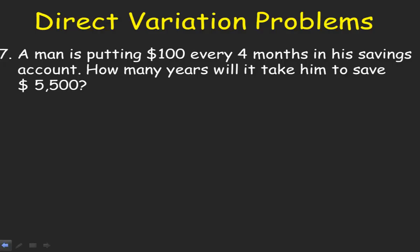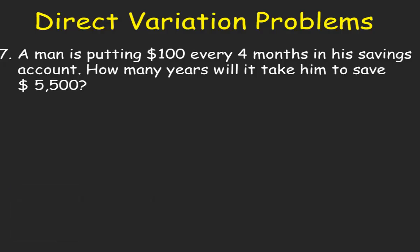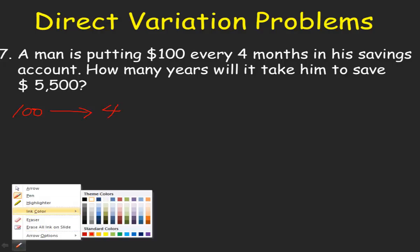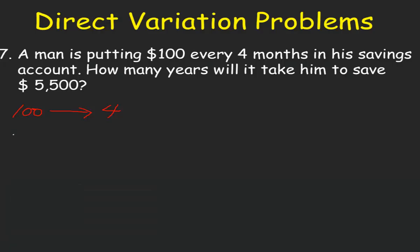Problem number 7. A man is putting $100 every 4 months in his savings account. How many years will it take him to save $5,500? So we have $100 to 4 months. We are going to make the direct variation equation. Our equation will be 100 is equal to the constant of proportionality k multiplied by 4. To find for the value of k, we need to cancel out 4.